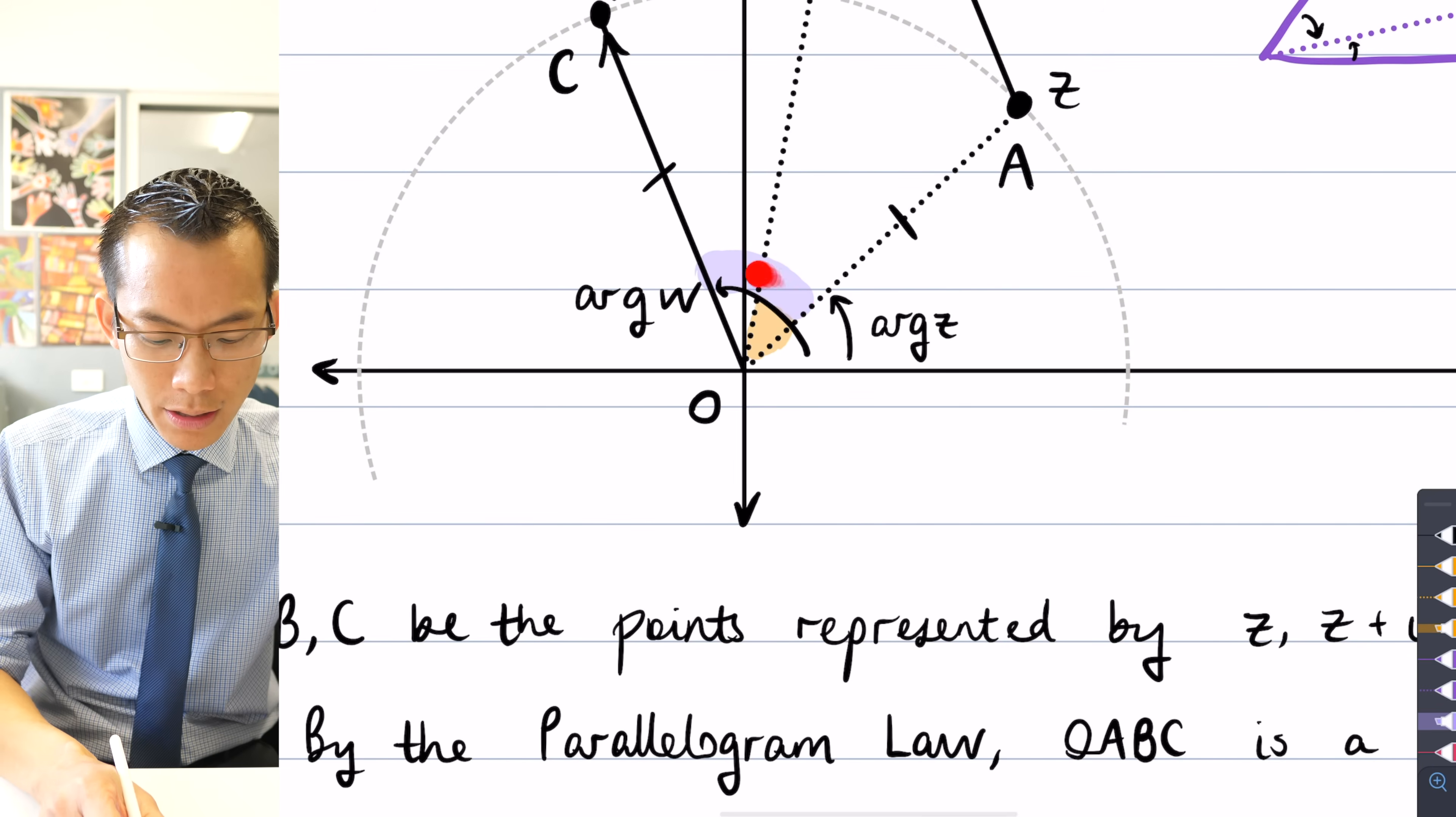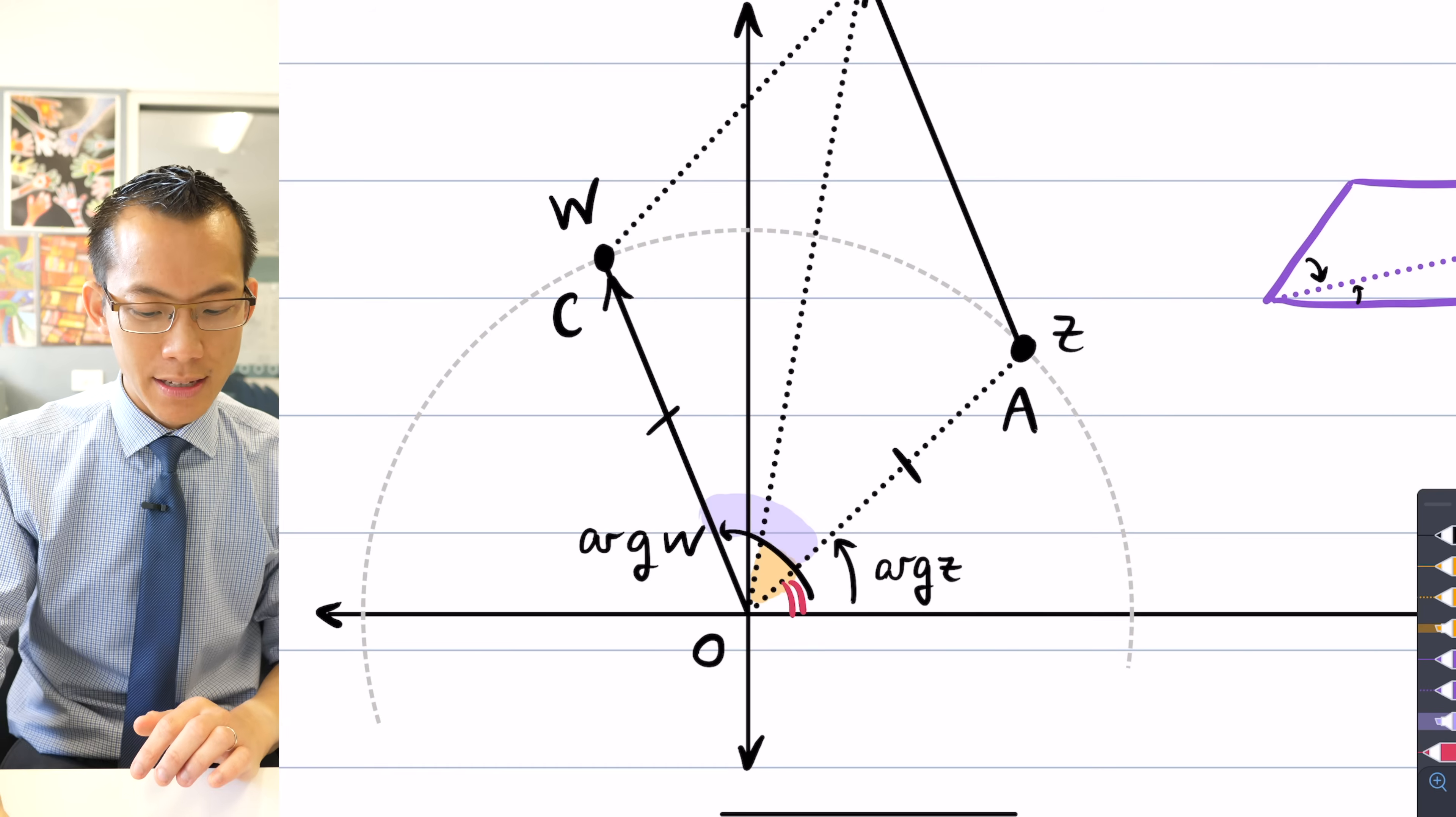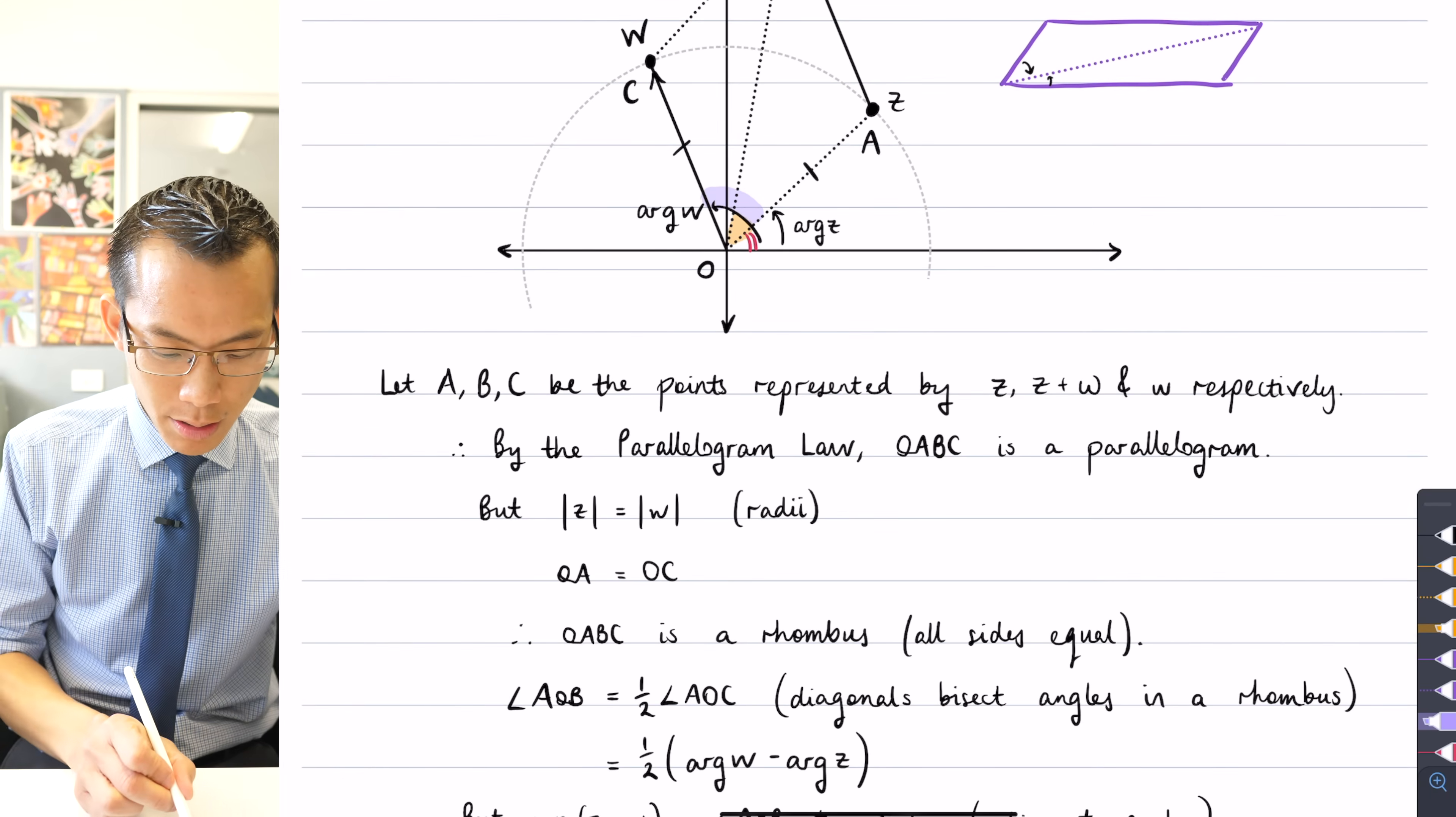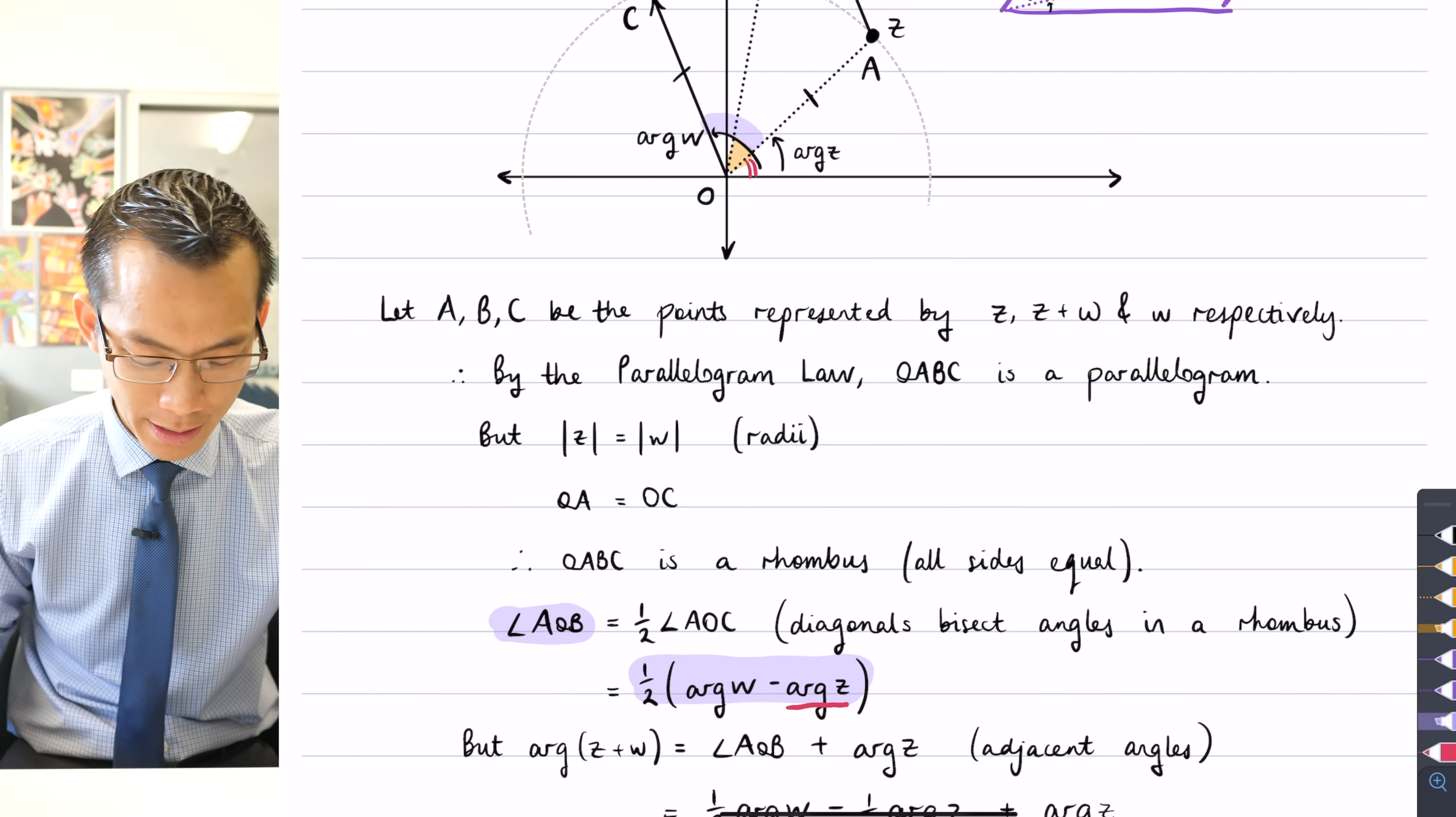And the thing about that angle there, this purple angle you can see, it starts with arg w, but it's not including this teeny tiny little bit in here. See that? It's like arg w, but I've subtracted that red piece there. But that red piece is arg z, because it is the argument from the real axis all the way up until I'm pointing at z. So that's why this angle here in purple, I might as well highlight that, that is going to be, that's AOB, but it is half of arg w take away arg z, remembering that arg z is that little red angle that I was subtracting in the first place.